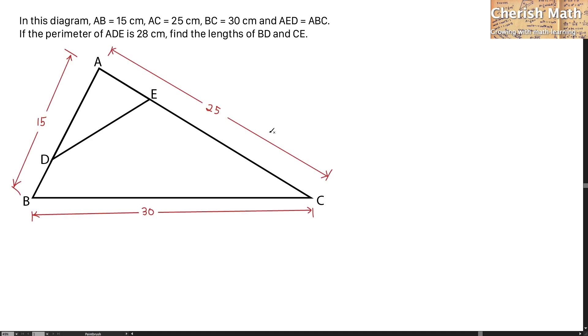I'm going to label the length of side AB as 15 cm, which is here. AC is 25, BC is 30. Angle AED I'm going to name as theta, which is angle theta here, same as angle ABC.